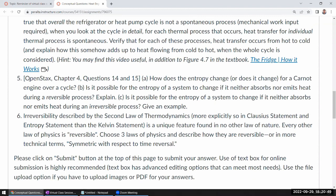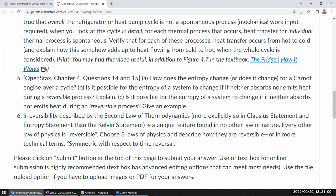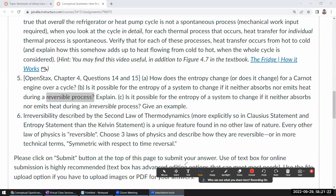Okay, I spent probably too much time there. Let's wrap this up. How does the entropy change for a Carnot engine over a cycle? It doesn't. That's what state function means. Is it possible for the entropy of a system to change if it neither absorbs nor emits heat during a reversible process? No. Because for a reversible process, you had this expression of entropy. For a reversible process, a change of entropy is given by dQ over T. This is only for reversible processes. So for a reversible process, if this is zero, then change of entropy is zero.